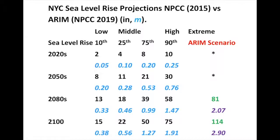Then there is another instability that has been proposed but hasn't really been observed — the marine ice cliff instability. Where the Antarctic ice sheet ends against the ocean, you have big cliffs because the ice sheet is rather thick. If the cliff is high enough, there's an inherent instability and some of these ice slabs could break off. That particular instability hasn't really been tested — it's been proposed — and this is what was incorporated into a certain model that went into the ARIM scenario. In that sense, you can look at it as a real extreme case.